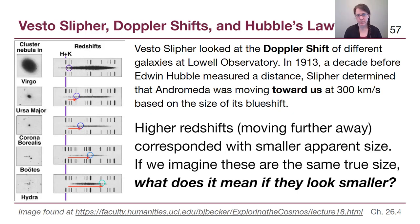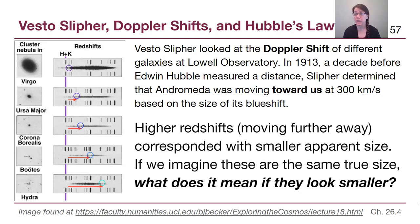To answer how we measure objects at even larger distances, we have to go back to an idea from chapter 5: the Doppler effect, or Doppler shift. Vesto Slipher was a scientist focused on getting the spectrum of different galaxies — at a time when we didn't know they were galaxies, so these were nebulae — and measuring the Doppler shift of those spectra.